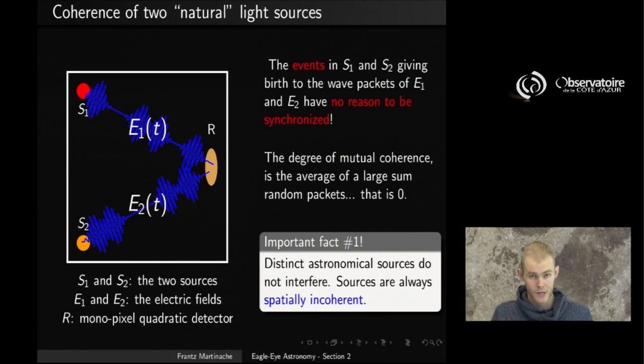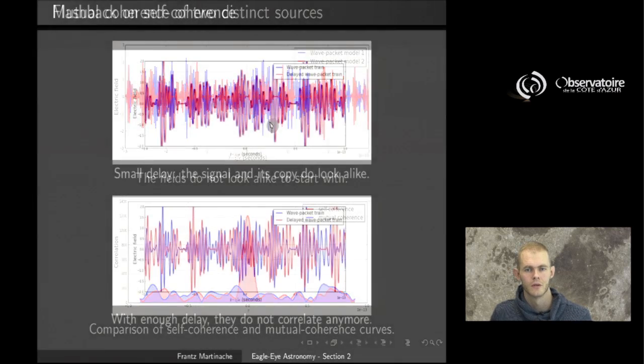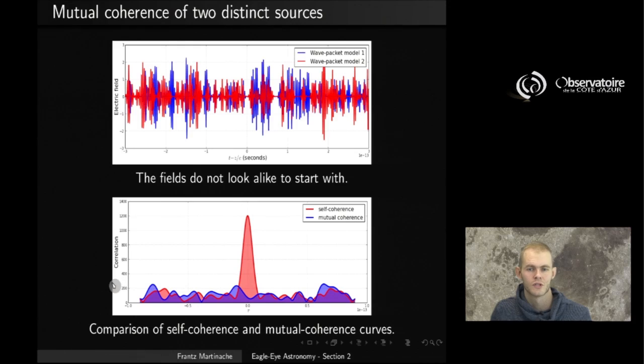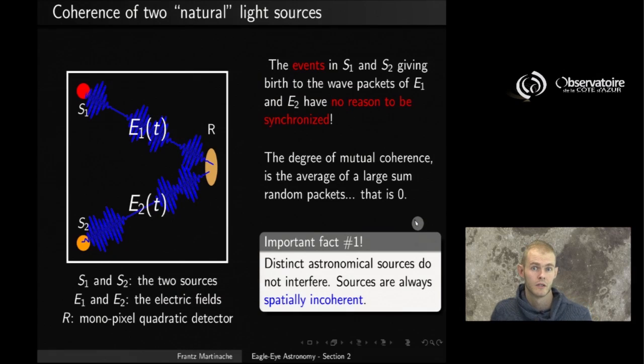they have no reason to be synchronized at all. Well, I mean, they are different objects or different locations of the same object. The local temperature may be different. There's no reason for the wave packets to be synchronized. And so if we look at one receiver trying to mix the two signals E1 and E2, well, just like we saw it in our previous case here, we just have to accept the fact that we are never going to be able to measure any mutual coherence significantly different from zero. And that is a very important fact. One of the most important pieces of information you want to keep in mind in the context of interferometry is that the light of distinct astronomical sources will never interfere with each other.